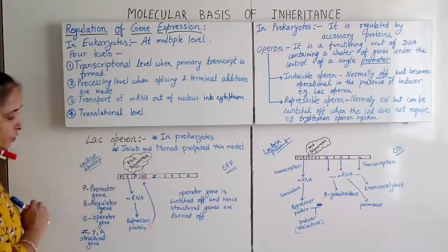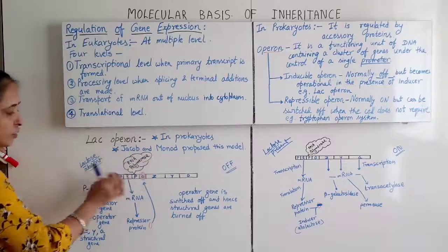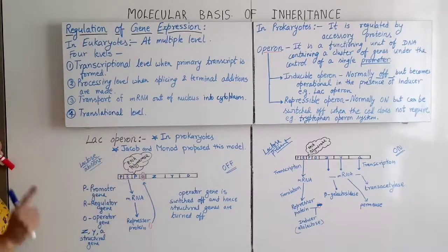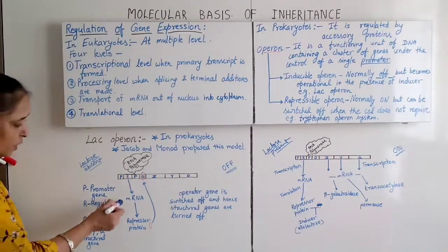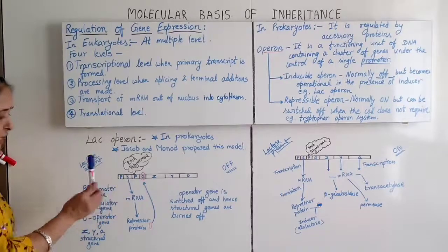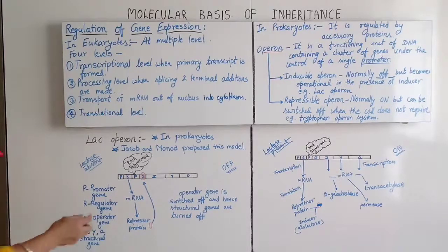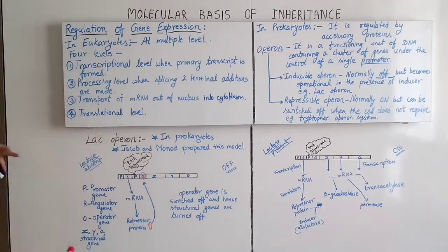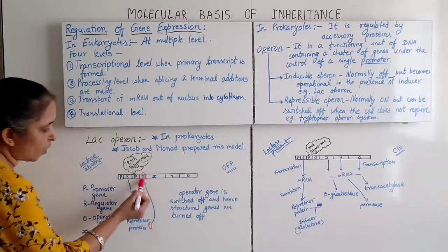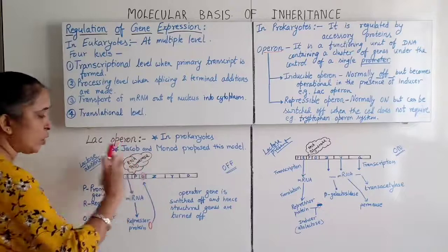In the OFF condition, the promoter gene is where the RNA polymerase enzyme attaches, and this enzyme helps in transcription. The regulator gene undergoes transcription to produce messenger RNA, which then undergoes translation to produce a repressor protein. When lactose is absent, this repressor protein goes and binds to the operator gene, blocking it.